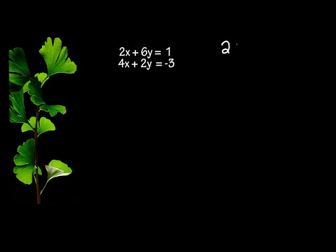So let's see. 2x plus 6y equals 1. I'm just rewriting these equations. 4x plus 2y equals negative 3. Now let's add down.